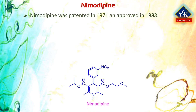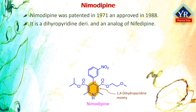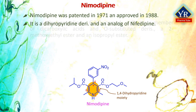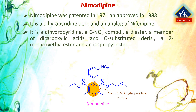The last drug of this lesson is Nifedipin. Nifedipin was patented in 1971 and approved for medical use in the US in 1988. It is a dihydropyridine derivative and an analog of the calcium channel blocking agent nifedipin with antihypertensive activity. It is a 1,4-dihydropyridine substituted by methyl groups at positions 2 and 6, a 2-methoxyethoxycarbonyl group at position 3, a metanitrophenyl group at position 4, and an isopropoxycarbonyl group at position 5.